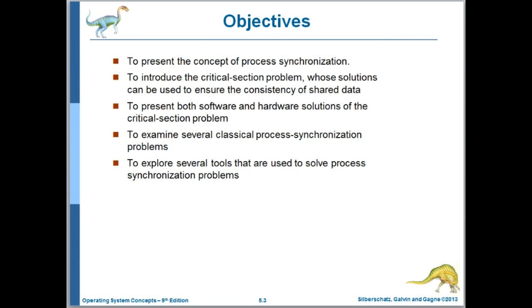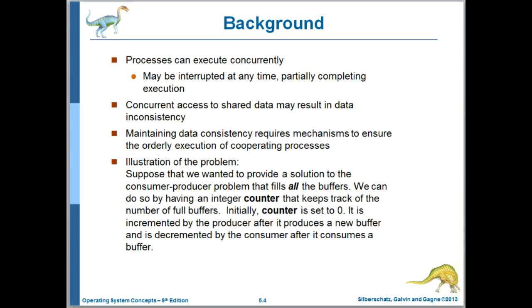Here are the chapter objectives. So here's the background. We know that processes can execute concurrently. That means that their execution is interleaved. So we execute some number of instructions from one process, then perform a context switch, execute some number of instructions from another process, etc.